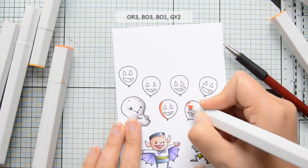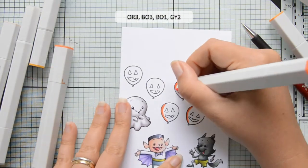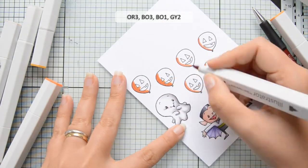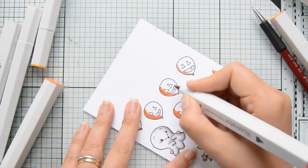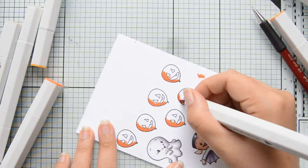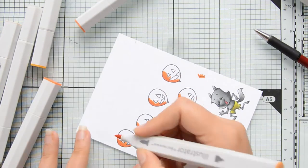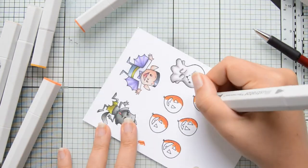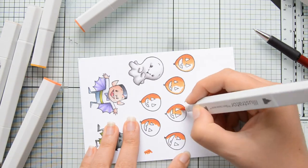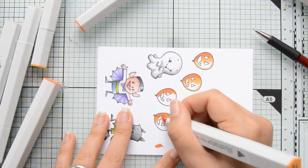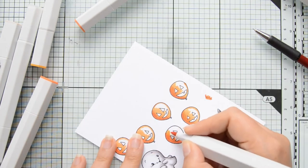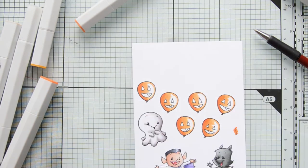So I went ahead and drew in all the faces on the balloons. I erased the pencil lines and then I went ahead and started coloring all the balloons with orange markers. I'm going to shade them too as if the light was coming from the top right of the screen, and I'm going to leave a small highlight to the right part of the balloons so that they look like they are shiny.